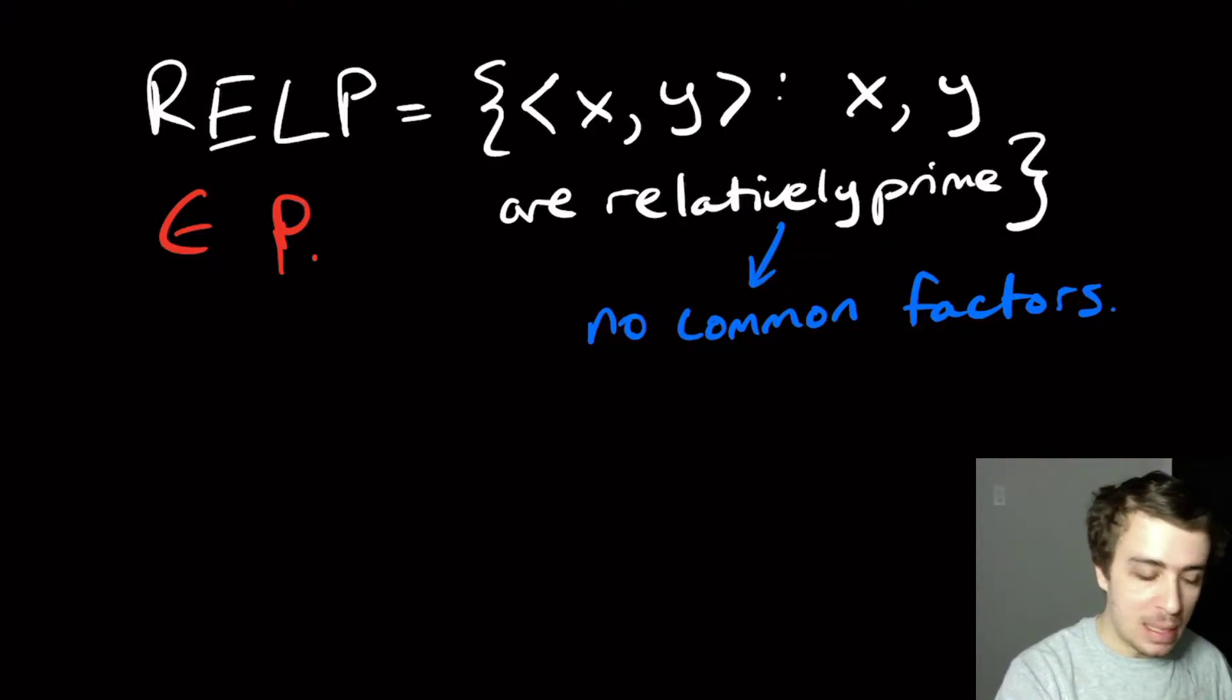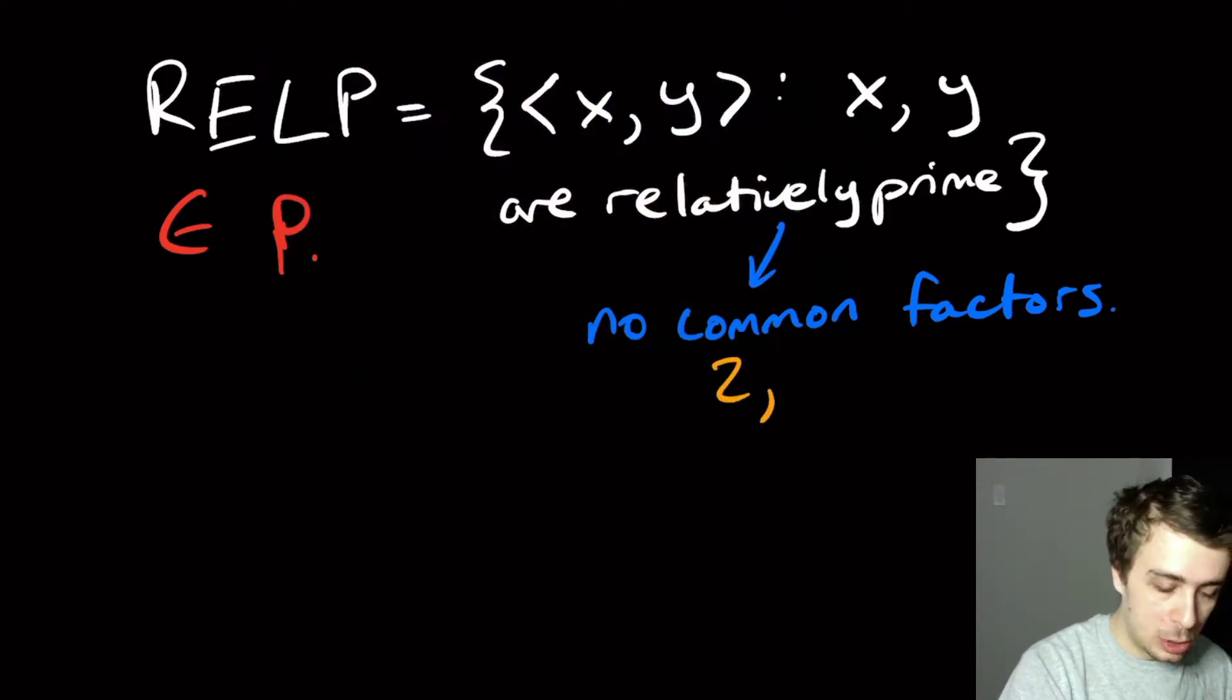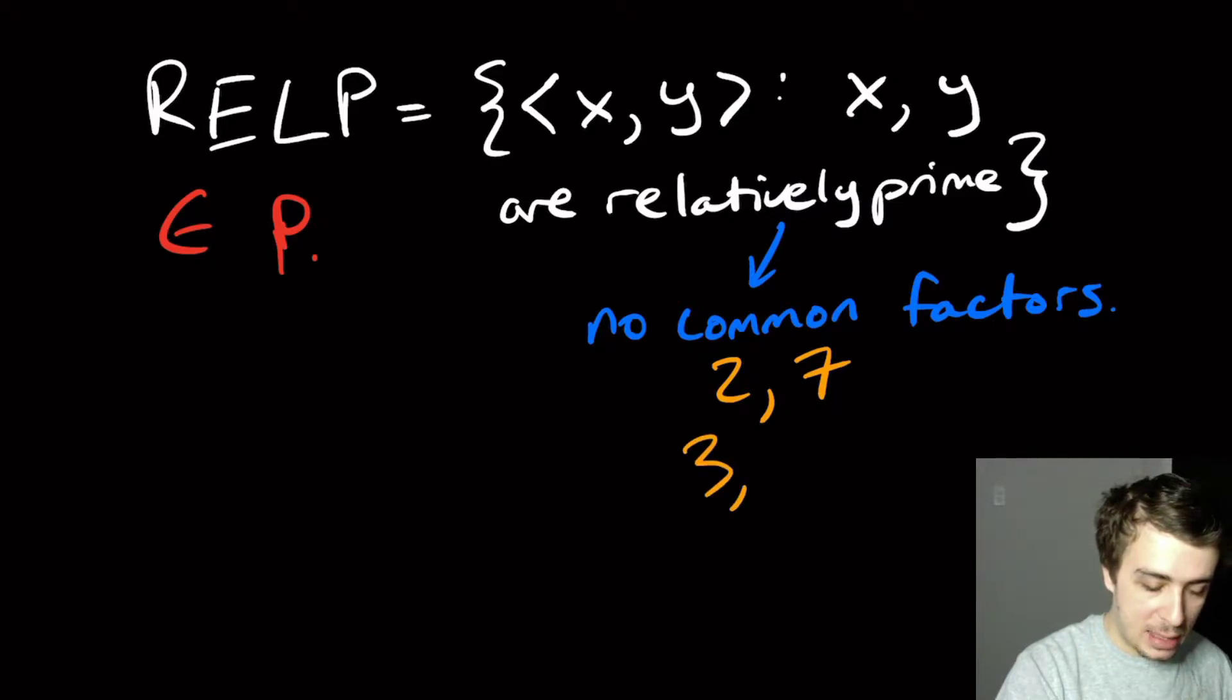Relatively prime means that there are no common prime factors, such as 2 and 7. We could have, let's see, 3 and 8. Those are relatively prime to each other.